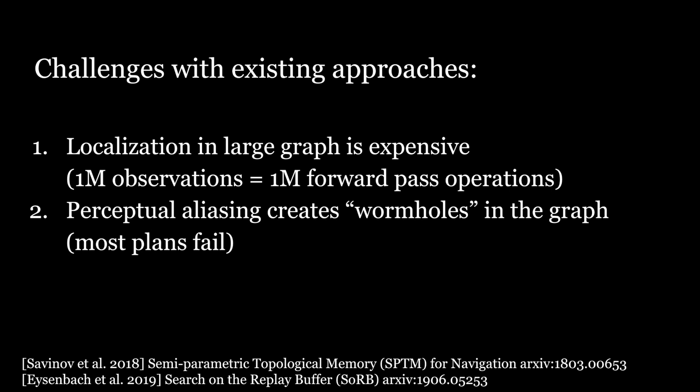First, current methods are computationally infeasible. If each image encountered is a node, then the graph becomes large and localizing the agent each time it takes a step becomes infeasible. Second, perceptual aliasing — when two images look similar but are actually far apart — introduces errors into the graph that break most plans.